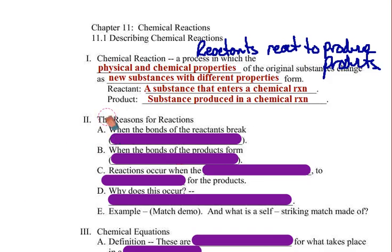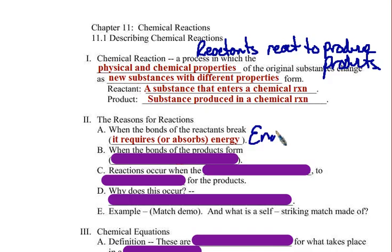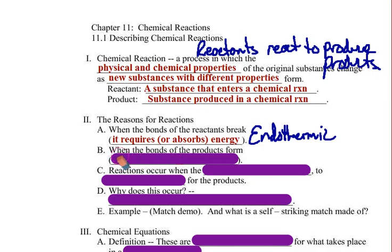Now, the reason for reactions. When bonds of the reactants break, it requires or absorbs energy. If something absorbs energy, this is an endothermic process. When the bonds of the products form, it releases energy, and this is known as an exothermic reaction.